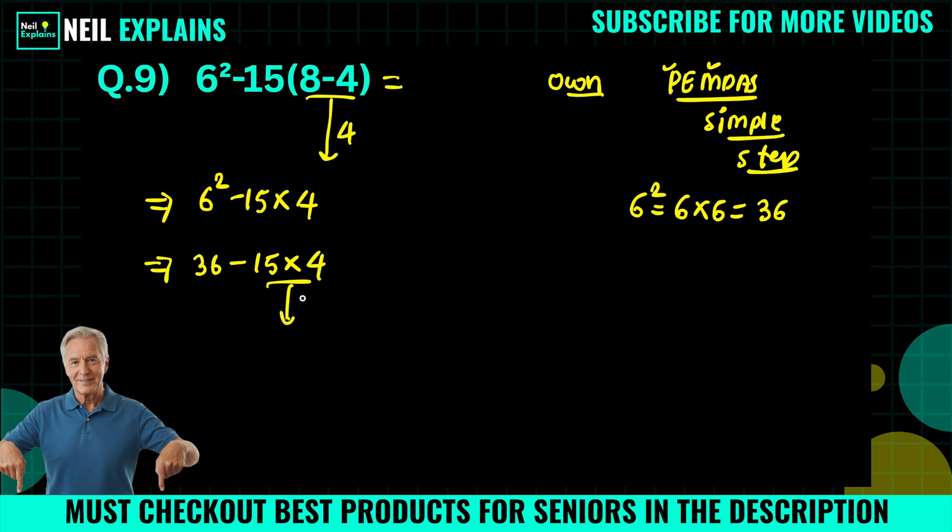15×4, you will get 60. So our next equation will become 36 - 60. When we subtract 60 from 36, we will get -24. So here, -24 is the right answer.